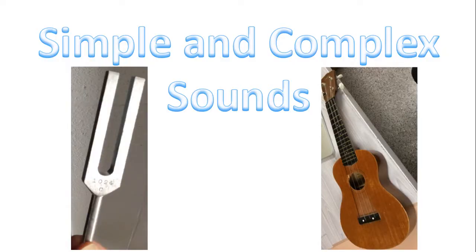Good morning. Today we're going to look at simple and complex sounds. The sound produced by a tuning fork is considered to be a simple sound, whereas the sound produced by a ukulele is considered to be a more complex sound.